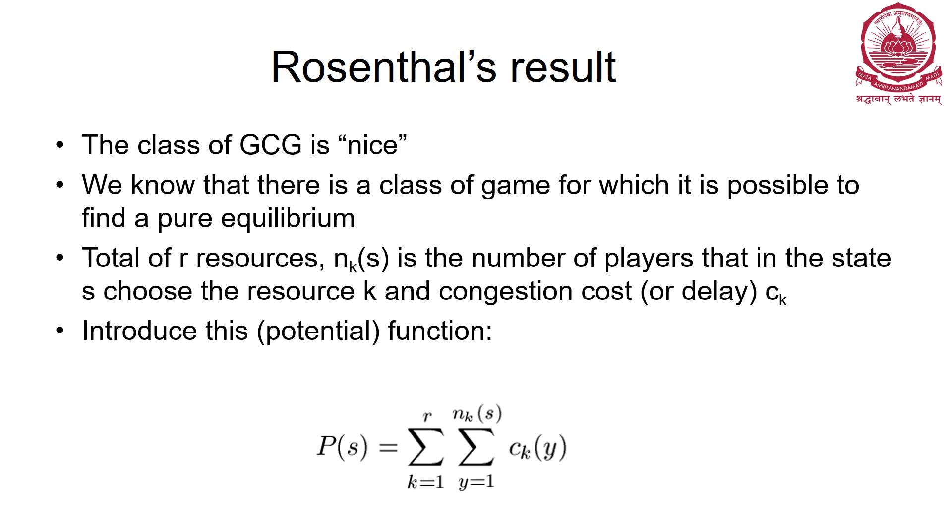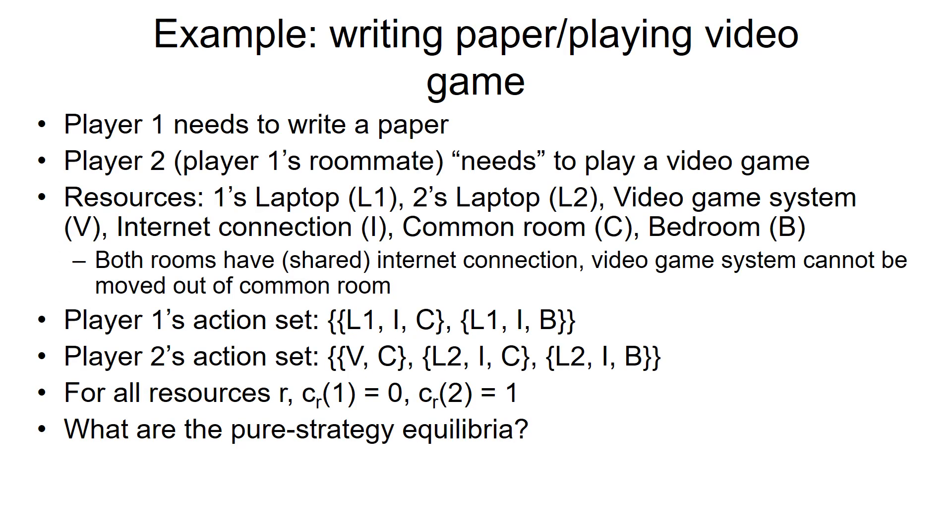We can introduce something called a potential function: Σ(k=1 to r) Σ(y=1 to nk) ck, which is essentially a function that is mapped from your congestion game.